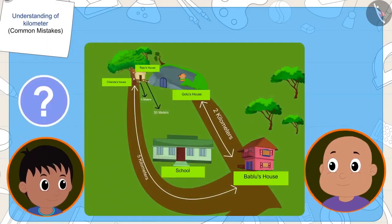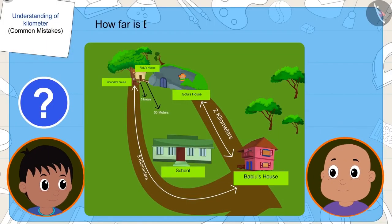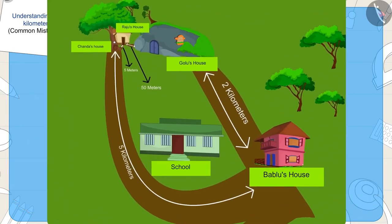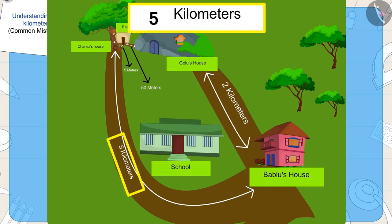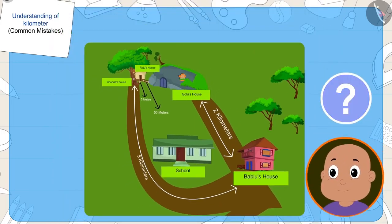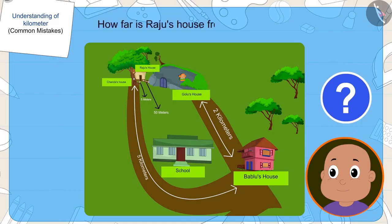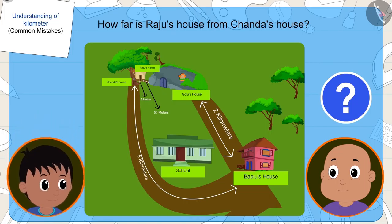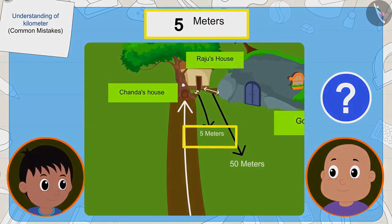Raju asks Bablu, how far is his house from Chanda's house? Bablu tells him that his house is five kilometers away from Chanda's house. Then Bablu asks him, how far is his house from Chanda's house? Raju said, at a distance of five meters.